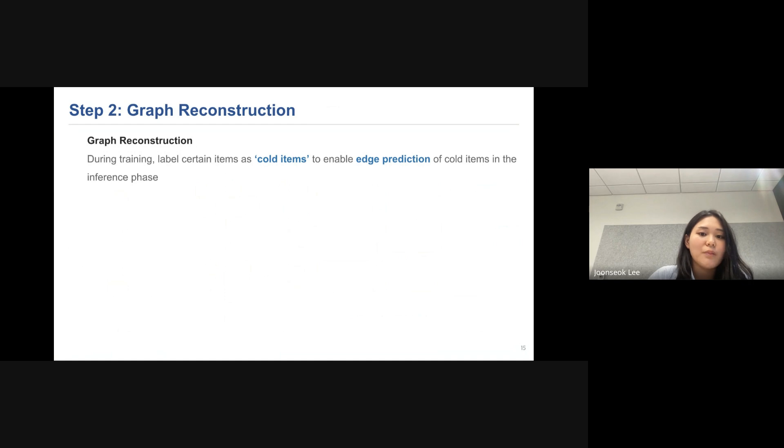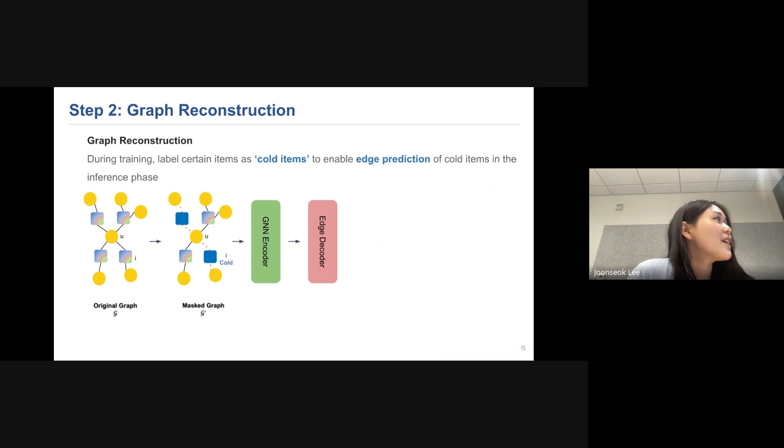And next I'll talk in detail about graph construction part. By using user and item node embeddings produced from the previous part, we make user-item bipartite graph. Then we label certain items as cold items and mask all the associated edges. And this process is to mimic the task base where the cold item does not have any connected edges. Then it processes through GNN encoder and edge decoder to get the edge probability. And I'll talk about the GNN encoder and edge decoder in detail in next slides. And this part, reconstruction loss is used to train, which tries to make G-rec similar to G.